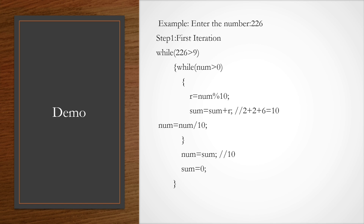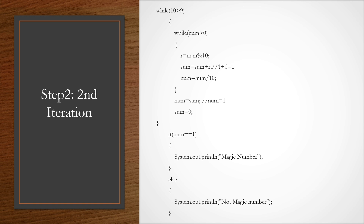After the second iteration, if the sum — which is 10 — is greater than 9, it checks again for the number greater than 0, finds the remainder, and we get a sum of 1. If this occurs and we get the sum as 1, that is basically the magic number.